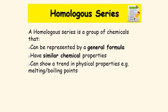Now we're going to move on to something called homologous series. Hydrocarbons are split into different homologous series. A homologous series is a group of chemicals that can be represented by one general formula, that have similar chemical properties, and show a trend in physical properties. By physical properties we mean things like melting and boiling points — for example, a trend where increasing the number of carbons causes melting and boiling points to increase or decrease. But there has to be a trend.